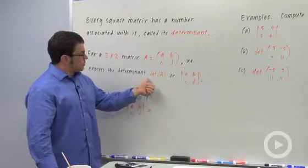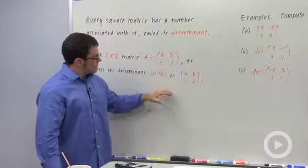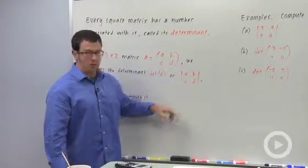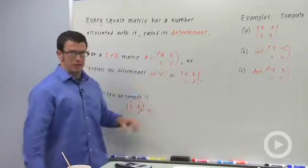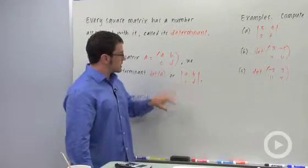We write the determinant two ways, either determinant A like this, or with vertical lines, almost like absolute value. But it doesn't mean absolute value in the context of matrices, this means the determinant.